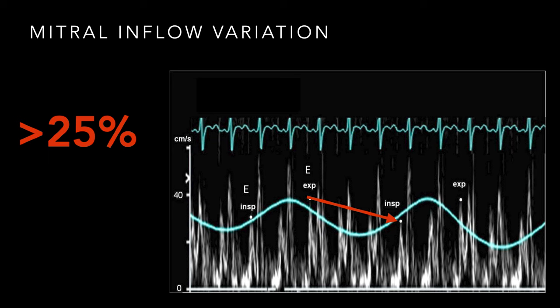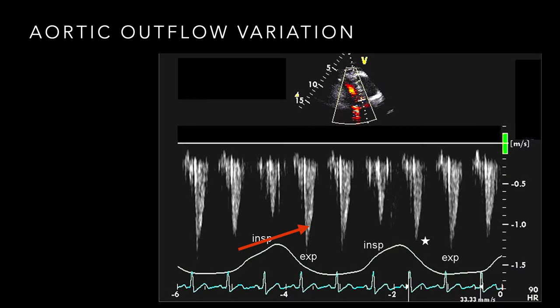The same phenomenon applies to mitral inflow variation. Place the pulse wave gate at the mitral leaflet tips using the same technique. Greater than 25% variation is considered abnormal for mitral inflow. Additionally, aortic outflow tract variation uses a pulse wave gate on the LVOT and shows decreased velocity beat to beat with respiratory variation — a third valve site to assess.